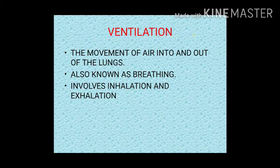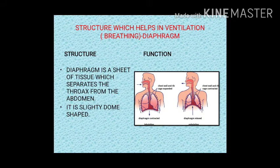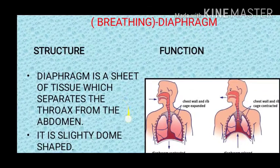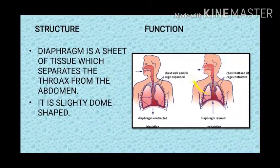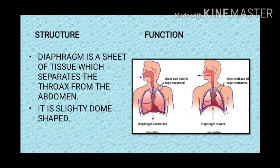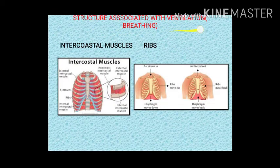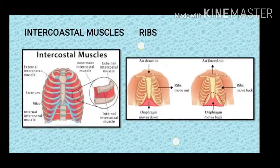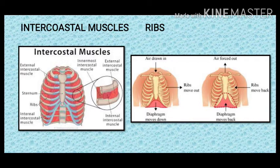Next, about ventilation. The movement of air into and out of the lungs is known as ventilation, also called breathing. It involves inhalation and exhalation. Structures that help in ventilation include the diaphragm, a sheet of tissue that separates the thorax from the abdomen and is slightly dome-shaped. The diaphragm contracts during inhalation and relaxes during exhalation. The intercostal muscles are associated with the ribs; there are two types — external and internal — and both assist during inhalation and exhalation. The ribs also move in and out during inhalation and exhalation, helping in breathing.